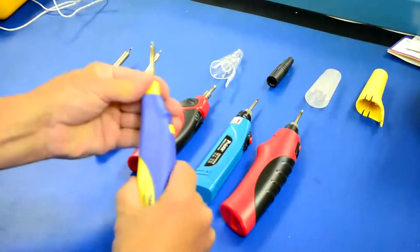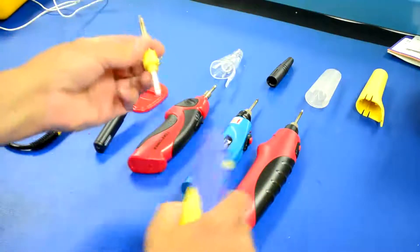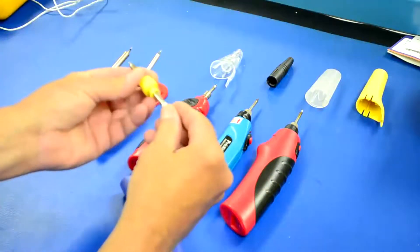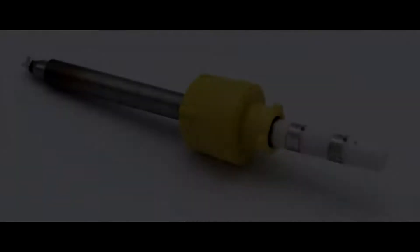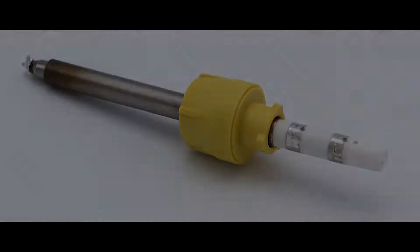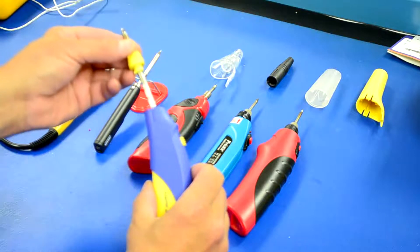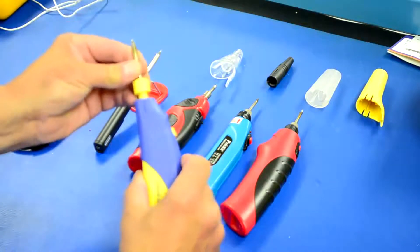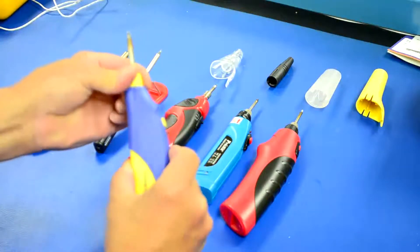Whereas the Hakko has kind of a standard cartridge heater in it. Looks a little more durable, maybe a little more reliable. Can't say for sure. Hakko is a good name in soldering irons, though.